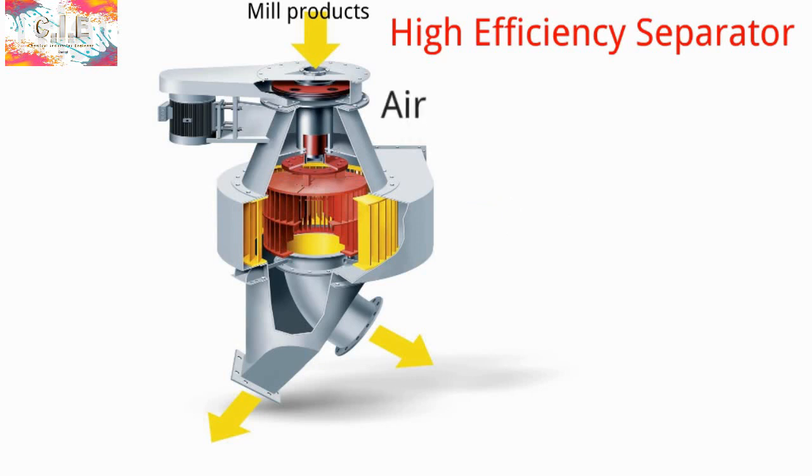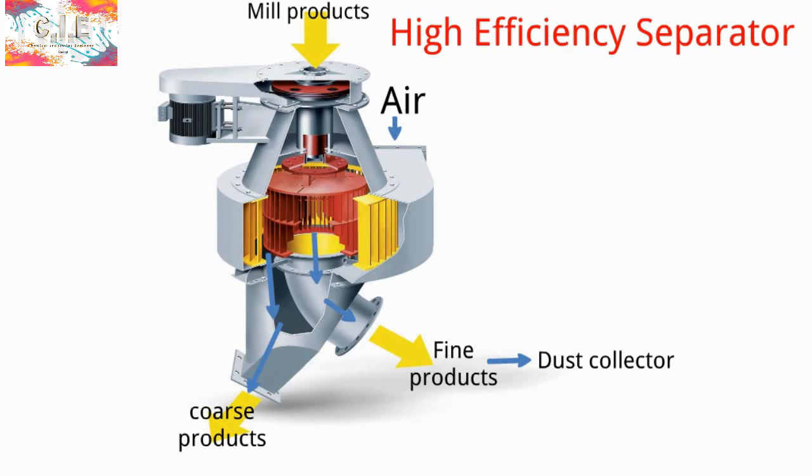While the air stream enters to the separator in annular flow and takes the fine products to the inside of the cage, and then goes to the dust collector. The coarse will leave from the outlet of the cone.